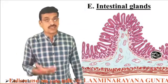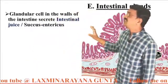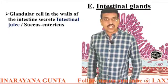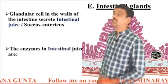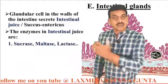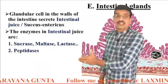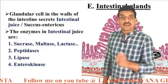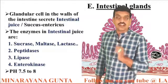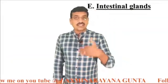The intestinal glands are present in the walls of the small intestine and secrete a juice called intestinal juice or succus entericus. The succus entericus consists of several enzymes: sucrase, maltase, lactase (collectively called disaccharidases), peptidases, lipase, and enterokinase. The pH of intestinal juice is 7.5 to 8, meaning it is alkaline.